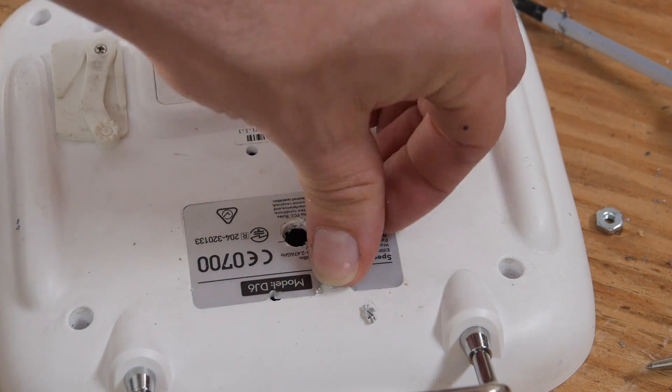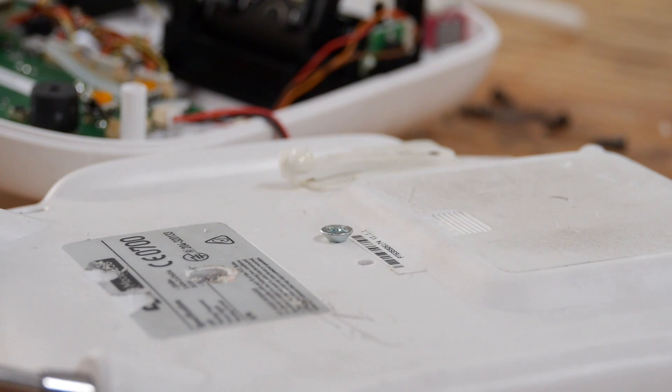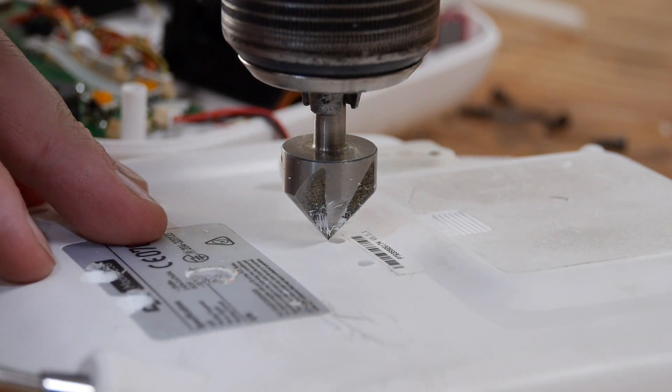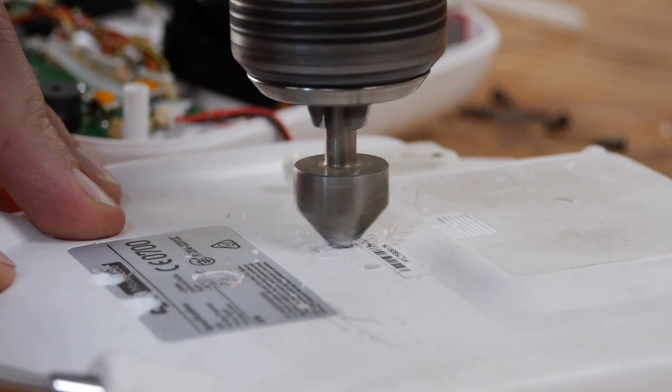We're going to want our machine screws to fit flat on the back of the controller, which means using a countersink to drill out the holes. Drill into the holes slightly before test fitting the screws until they fit flush with the surface.